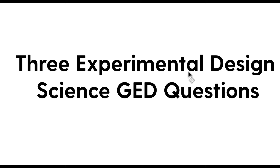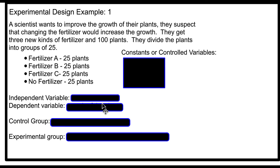This is a video of three experimental design science GED questions. A scientist wants to improve the growth of their plants. They suspect that changing the fertilizer would increase the growth. They get three new kinds of fertilizer and 100 plants, and divide the plants into groups of 25.